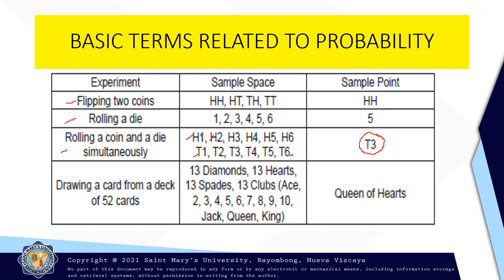We have also drawing a card from a deck of 52 cards. In the 52 cards, we have 13 diamonds, 13 hearts, 13 spades, 13 clubs — or ace, 2, 3, 4, 5, 6, 7, 8, 9, 10, jack, queen, and king. The given sample point in this given example is queen of hearts.